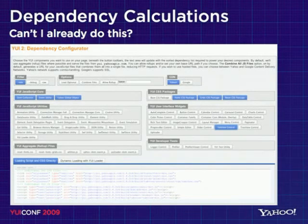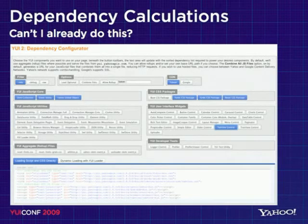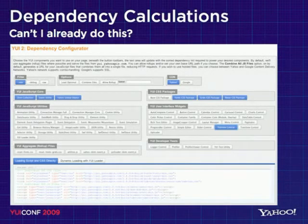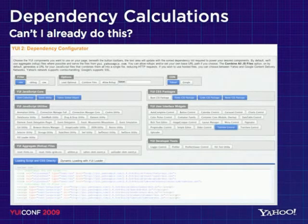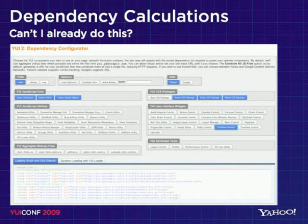So on dependency calculations — the question you probably have is: can I already do this? You can. The way you do it today is probably one of two ways. You're either using the dependency configurator, where you basically go and hand-select the components that you want to use, and then it generates copy-and-paste code for you. There's also a tag for the dynamic loader if you want to use the front-side loader rather than copy and pasting the individual files.